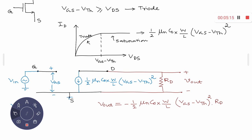As mentioned earlier, MOS is a four-terminal device — gate, source, drain, and body — but for now we will treat it as a three-terminal device: gate, source, and drain. Between gate and source there is an isolation — at least for DC, there is no current, because you have a silicon dioxide insulator layer present between the metal and the substrate.